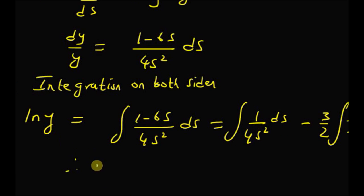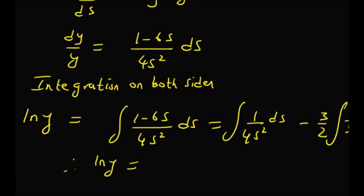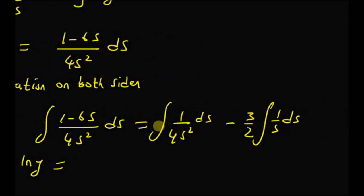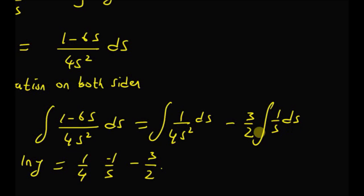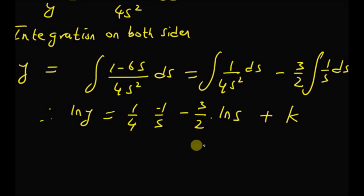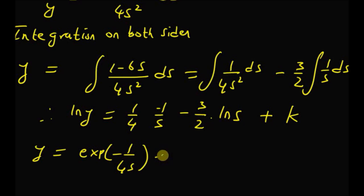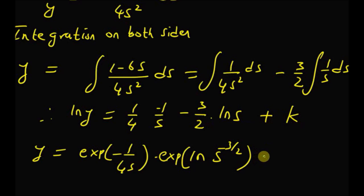From the left-hand side we have ln(y). On the right-hand side, the first integral gives (1/4)·(−1/s) = −1/(4s), and the second integral gives −(3/2)·ln(s), plus constant k. Taking the exponential of both sides, y = e^(−1/(4s)) · e^(ln(s^(−3/2))) · e^k = c · s^(−3/2) · e^(−1/(4s)), where c = e^k.